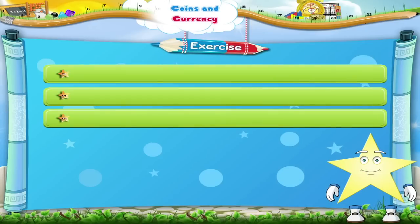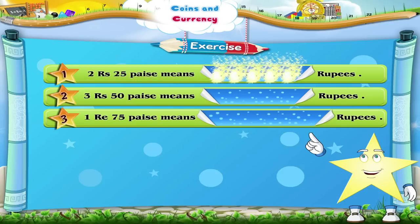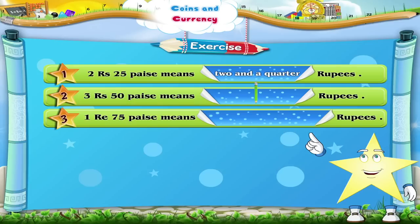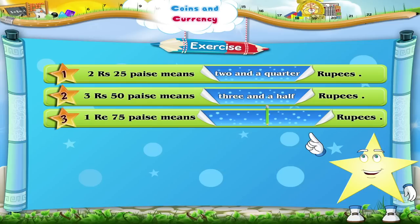Let us revise what we have learnt. Two rupees twenty-five paise means two and a quarter rupees. Three rupees and fifty paise means three and a half rupees. One rupee seventy-five paise means one and three quarter rupees.